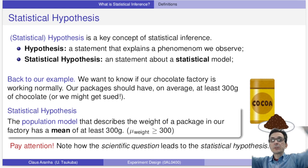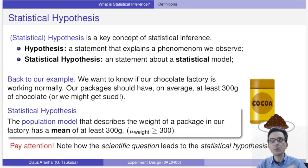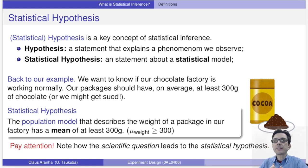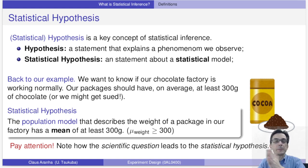If you start from the hypothesis, it's a bad habit because it may force you to invent numbers that are not related with what you really want to know. In the end, you are doing an experiment because you really want to know something — you must always focus on your research interest, not on the specific hypothesis or specific methods.